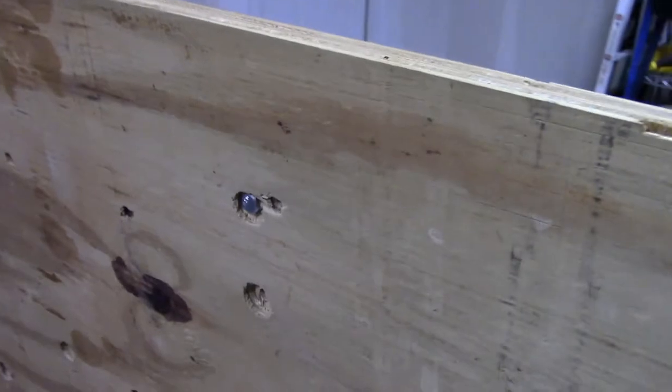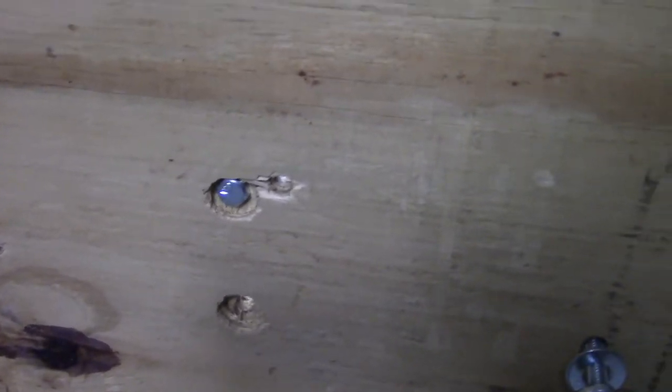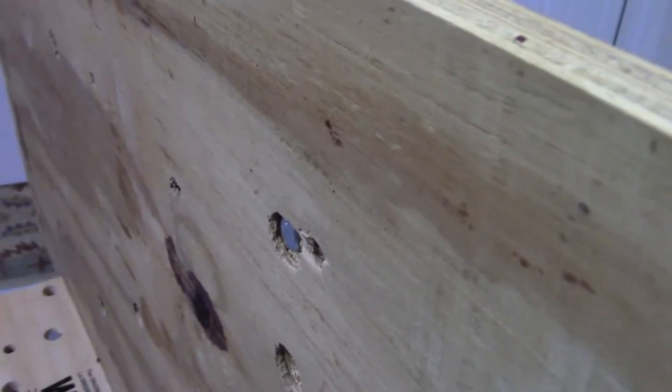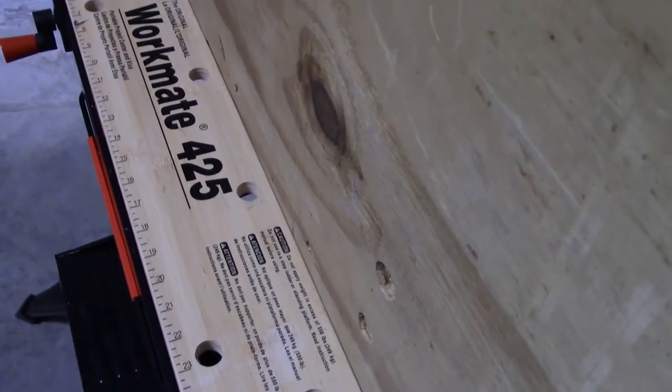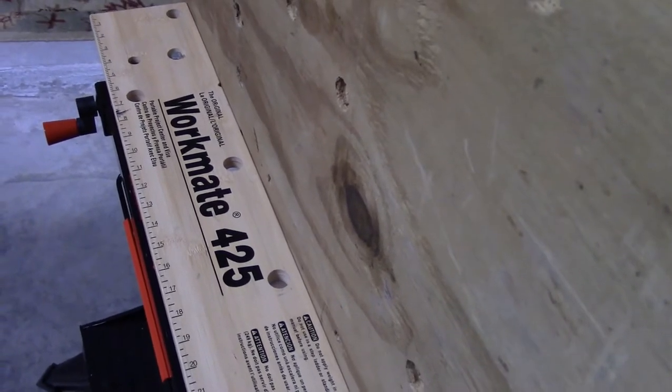First let's look at the bolt that's holding down the power tool. You notice what I've done is I've countersunk it. Why? Because I want it to be flush with the wood so it's not going to be rocking or scratching my bench or getting snagged on a dog hole.